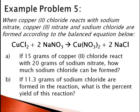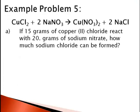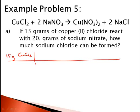If 15 grams of copper II chloride react with 20 grams of sodium nitrate, how much sodium chloride can be formed? And then Part B: if we actually make 11.3 grams of sodium chloride, what's the percent yield? Looking at Part A first, we take 15 grams of copper II chloride and stoich to a particular product — here we want sodium chloride.